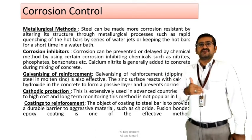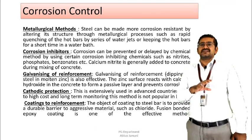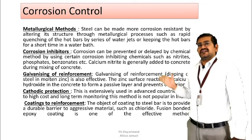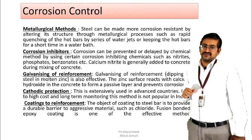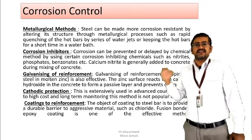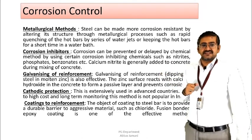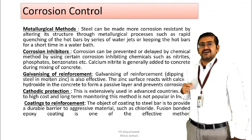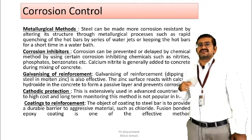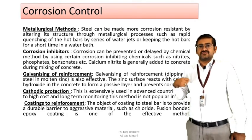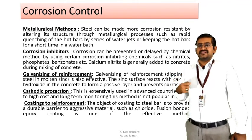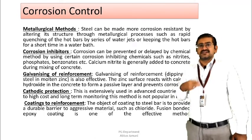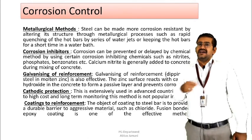All these options may not be available everywhere around the world — some regions follow certain methods based on economical reasons. Regarding the metallurgical method: steel can be made more corrosion-resistant by altering its structure through metallurgical processes such as quenching of bars — quenching hot bars by water jet or putting hot bars in a series of water baths. This alters the basic structure of the reinforcement somewhat, providing higher resistance to corrosion.